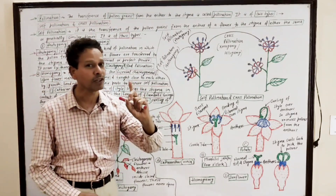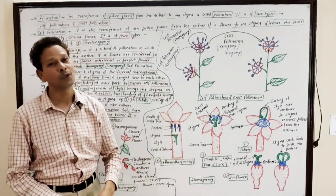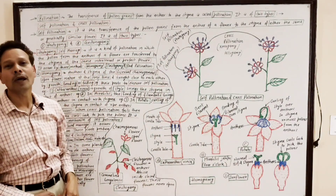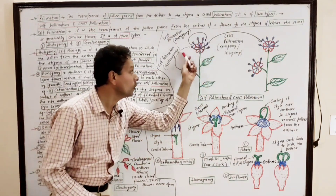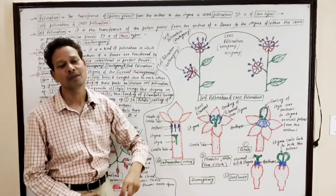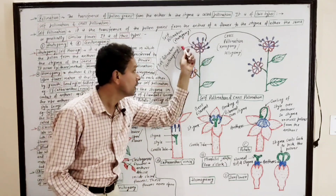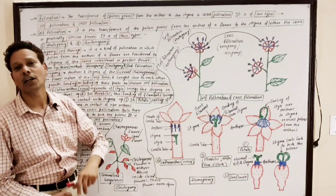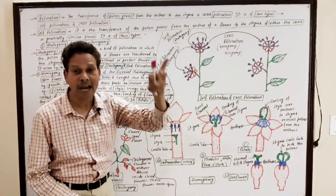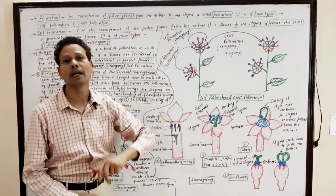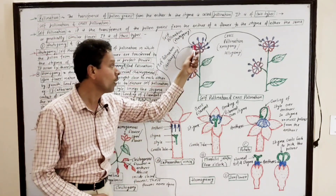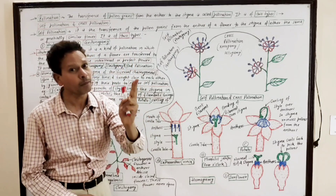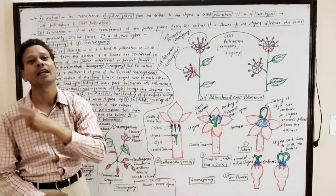Self-pollination is further divided into two types. The first is autogamy, which involves transference of pollens within the same flower. The second type is geitonogamy, which involves the transference of pollens from one flower to another flower of the same plant, or to a different plant having the same genetic material.